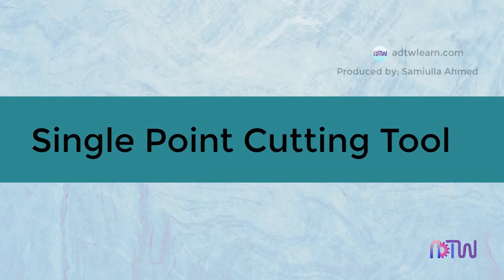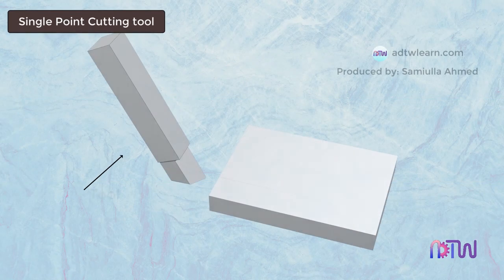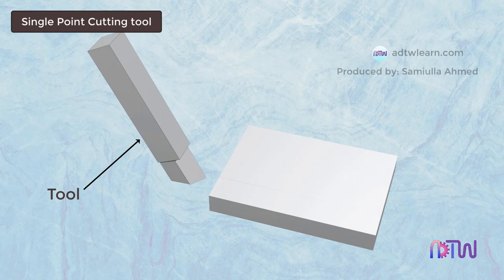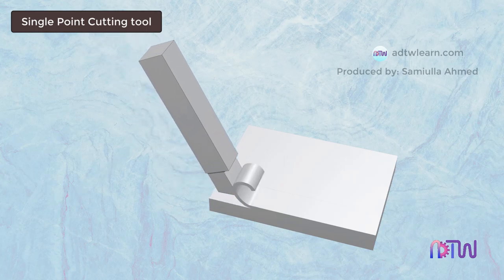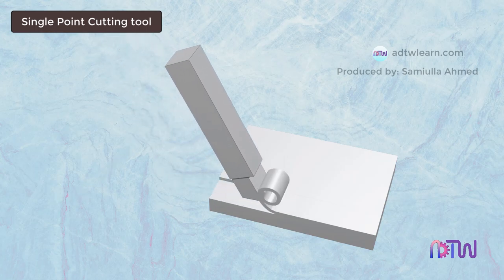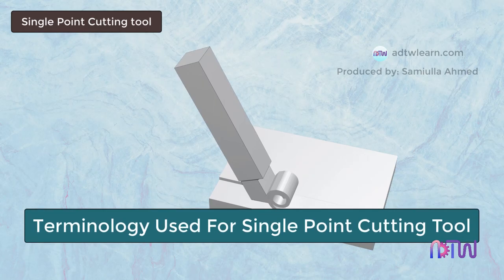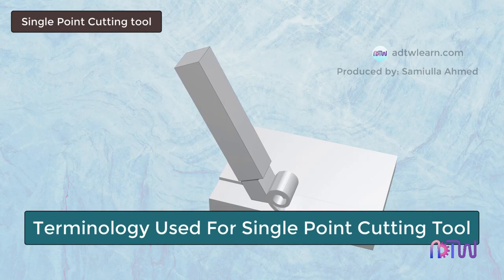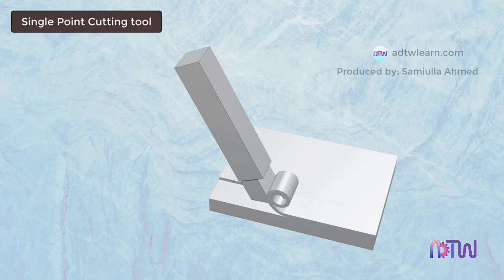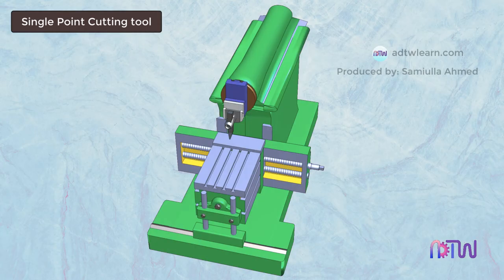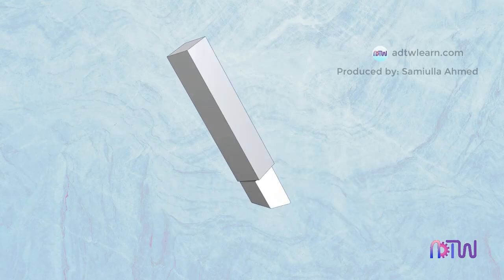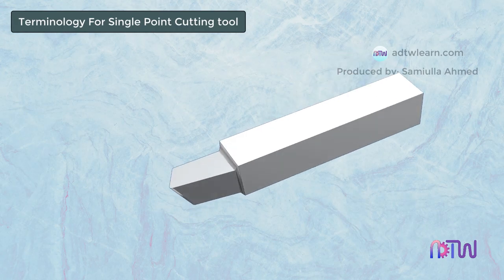A tool or cutter that removes material using a single cutting edge during a single stroke of movement is called the single point cutting tool. In this video we will understand the terminology for a single point cutting tool. Single point cutting tools are commonly used in lathe and shaper machines.